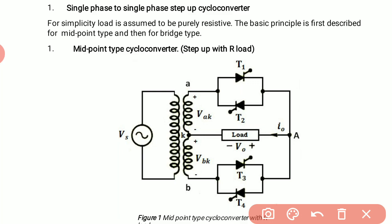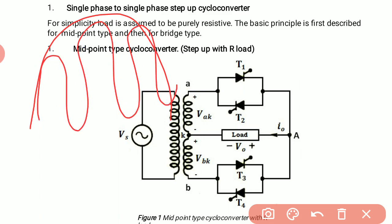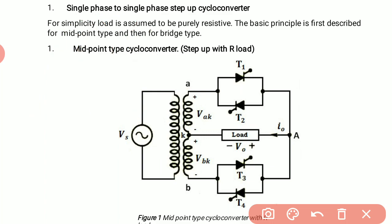This frequency multiplication can only happen if we control the turn-on and turn-off times of all four thyristors. For example, during the positive half cycle, to produce six sub-cycles we must turn the thyristors on and off at regular intervals. We can control their turn-on and turn-off times through the gate terminals. This is how the cycloconverter works as a step-up cycloconverter.